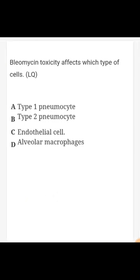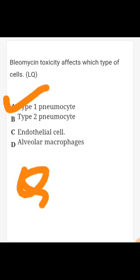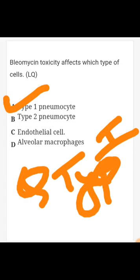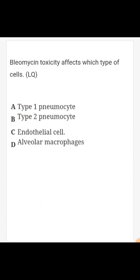Bleomycin toxicity affects which type of cell? The answer is type 1 pneumocytes — a point of common confusion. Bleomycin causes destruction of type 1 pneumocytes first. A memory tip: type 1 comes first, so it is destroyed first. Destruction of type 1 pneumocytes then triggers compensatory hyperplasia of type 2 pneumocytes.